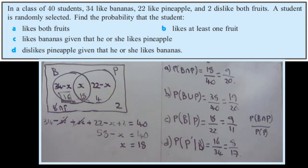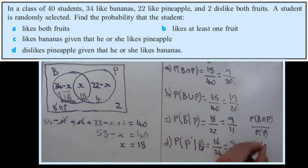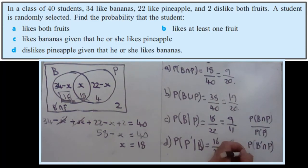And again, you could have done this using your probability A given B equals the probability of both over the probability of the given one. Which would have been the probability of both of these happening, B complement and P, over the probability of the given one, which was bananas.